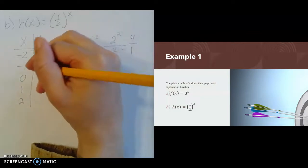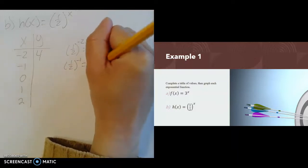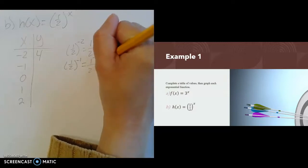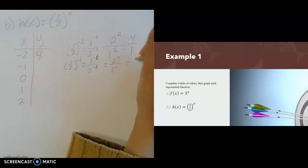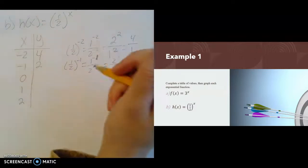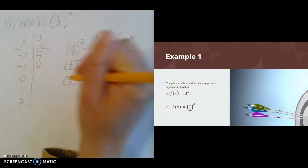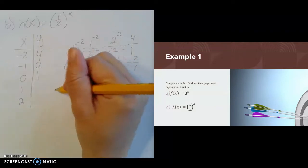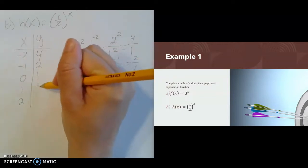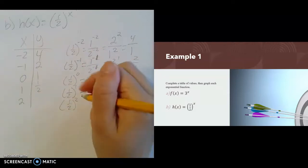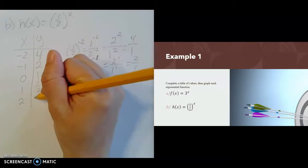If x is negative 1, we have 1 half to the negative first power — that's 1 to the negative first over 2 to the negative first. Neither exponent is happy where it is, so we move them: 2 to the first in the numerator, 1 to the first in the denominator — that's 2 divided by 1, which is 2. If x is 0, 1 half to the 0 power is 1, since anything to the 0 power is 1. If x is 1, we get 1 half to the first, which is 1 half.